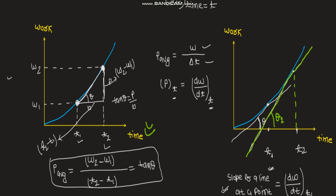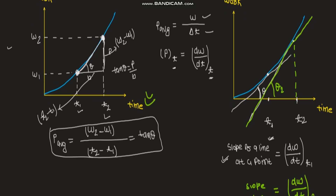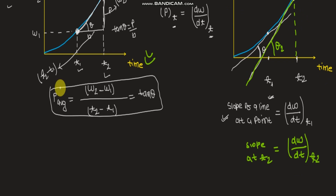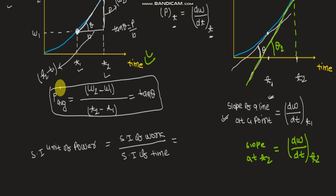Now that we have discussed instantaneous and average power, let's look at the unit of power. The SI unit of power equals the SI unit of work divided by the SI unit of time. The SI unit of work is joule and time is second, so the SI unit of power becomes joule per second.